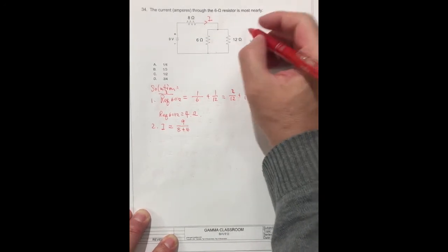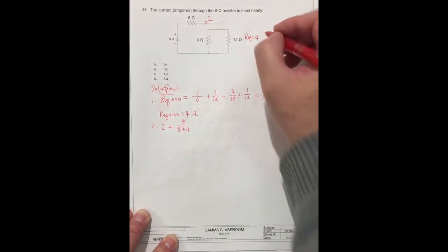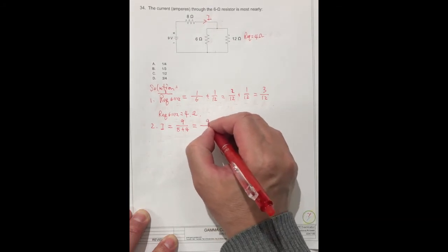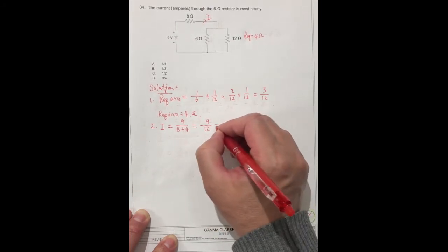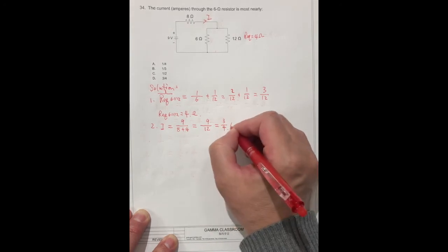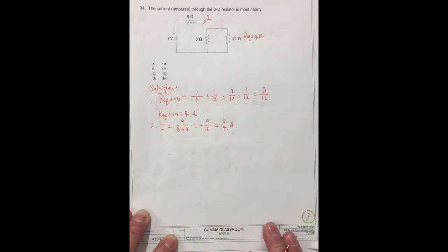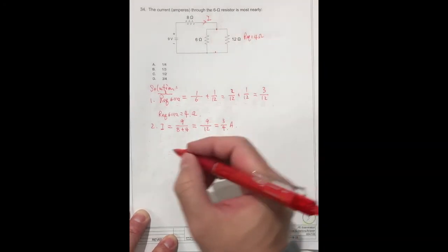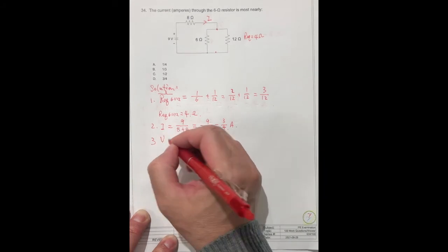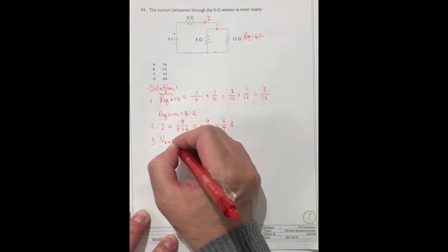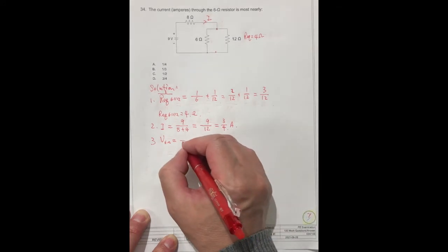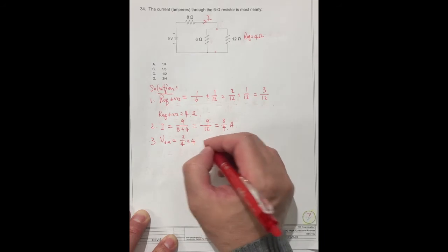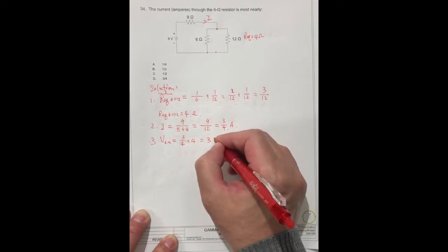So this is equal to 9 over 12, which equals 3 over 4. So this voltage, we know the equivalent, we know the current V. But in the other way, we can get the current, this is equal to 3 over 4 times 4.